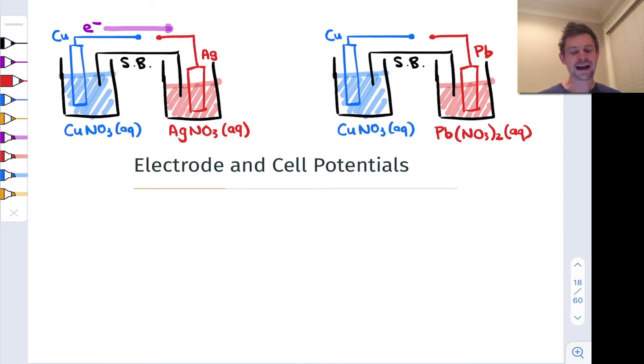On the left I have the copper-silver galvanic cell that we've seen before. We noted previously that electrons flow spontaneously from the copper side to the silver side. Spontaneously copper is oxidized to copper 2+ and silver 1+ is reduced to silver metal, so electrons flow spontaneously from left to right.